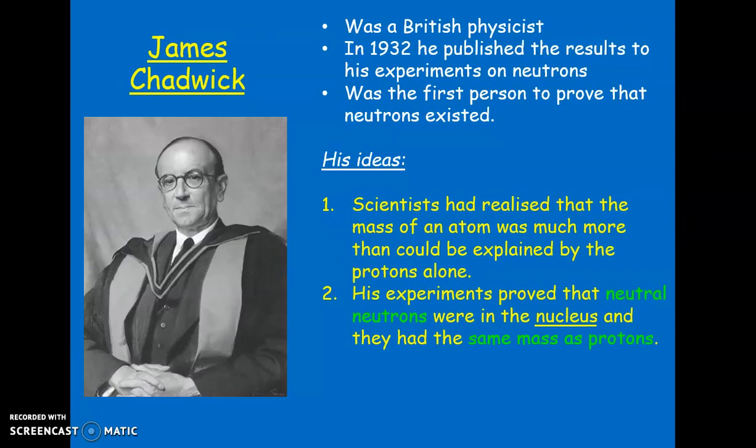James Chadwick was then the first person to prove that neutrons existed. Scientists had always found that when they calculated the mass of an atom, the number and mass of the protons didn't quite match up to the total mass of the atom — so they knew something was missing. His experiments proved that neutral neutrons in the nucleus had the same mass as protons, and that then gave the total mass of the atom.